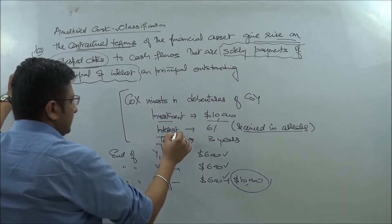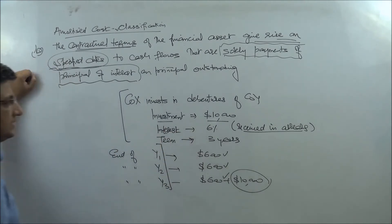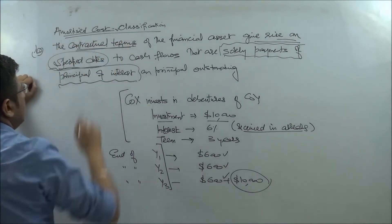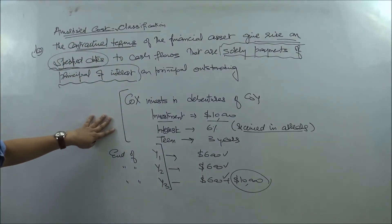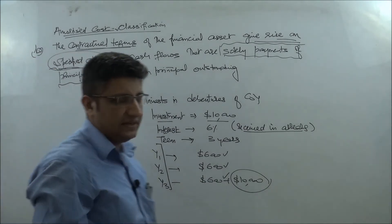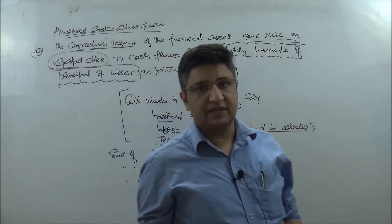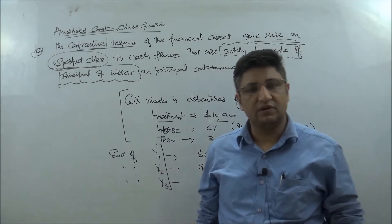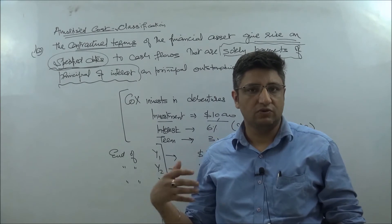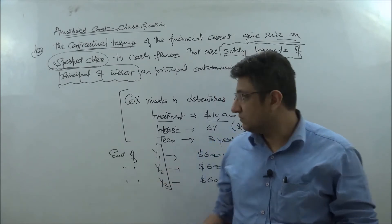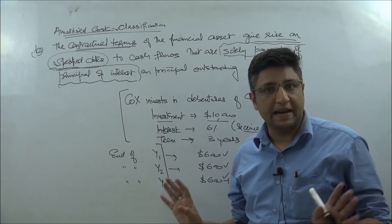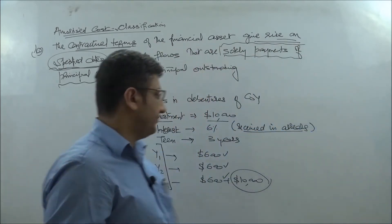This is a very classic, basic example of recovery of principal and interest on the principal outstanding — quite straightforward. This kind of financial asset meets the SPPI condition, and assuming the entity's objective is to hold this financial asset under the business model to collect contractual cash flows, the amortized cost model will be applied.